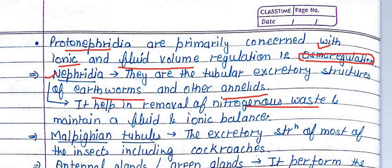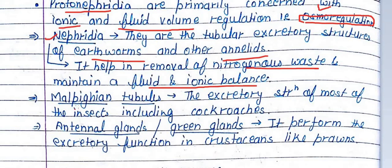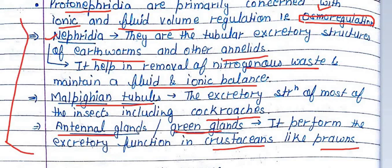Nephridia also help to maintain fluid and ionic balance. Then we have Malpighian tubules, found in cockroaches and insects. Then we have green glands or antennae glands, found in crustaceans. These are all different excretory structures found in different organisms.